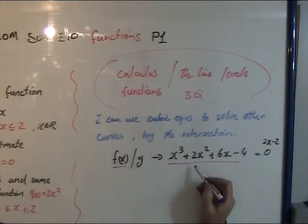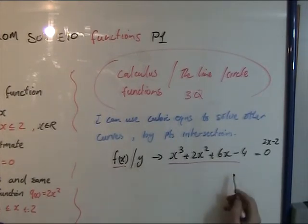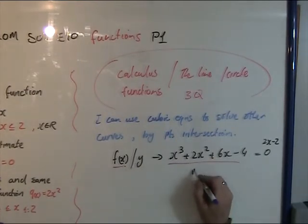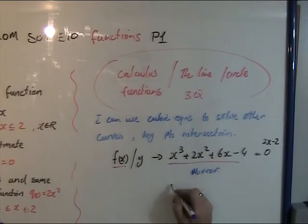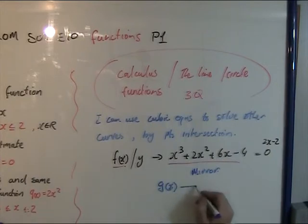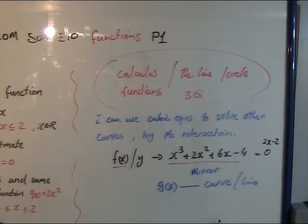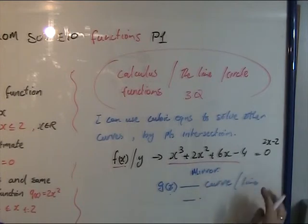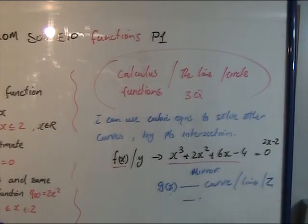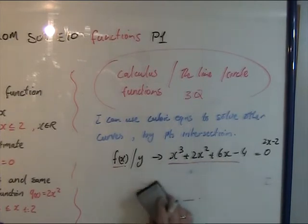So what do I need to do to f of x — the original equation — to make it mirror or reflect the other question, g of x, which is the other curve? It can be a curve, it can be a line, it can be a quadratic. They're usually a line or a number — it can be a number as well, an integer. I'll do one here with an integer.